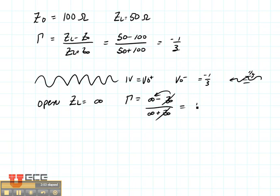Z naught is very small compared to infinity, so we can ignore it in both cases, and we get a magnitude of one. That means that all of the voltage that hits the end of an open circuit is reflected back, and it's in phase.